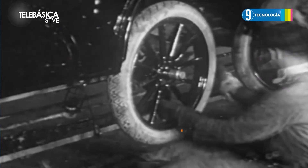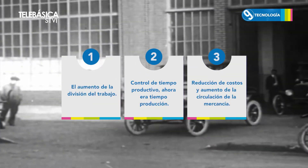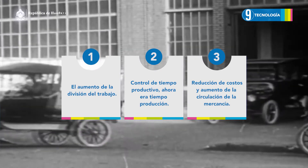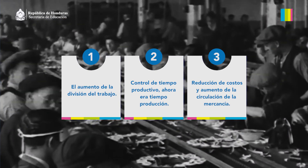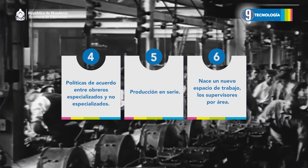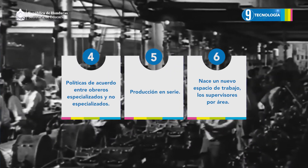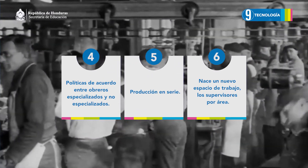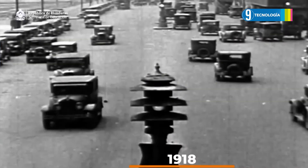En conclusión, los principales elementos de este método son: 1. El aumento de la división del trabajo. 2. El control del tiempo productivo y de producción. 3. Reducción de costos y aumento de la circulación de la mercancía. 4. Políticas de acuerdo entre obreros especializados y no especializados. 5. Producción en serie. 6. Nace un nuevo espacio de trabajo: los supervisores por área.